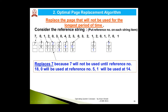Page 3 is brought in by replacing page 1. For page 4, compare {2, 0, 3}: scanning forward, pages 2 and 3 appear soon, so page 0 will be used after the longest period. Page 0 is the victim and is replaced by page 4. Continuing with the same logic through the full string, the total number of page faults is 9. Comparing FIFO (15 faults) with Optimal (9 faults) on the same reference string, Optimal page replacement clearly yields fewer page faults.